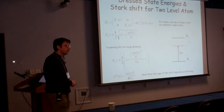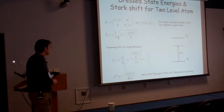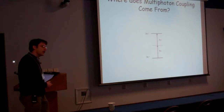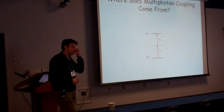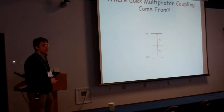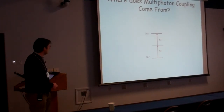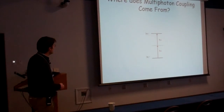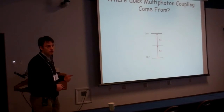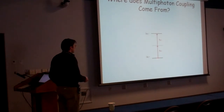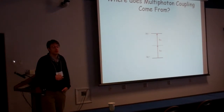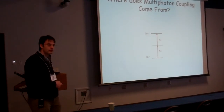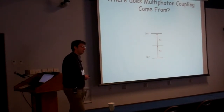Now, what happens if we consider a multi-photon coupling case? This is the basic idea behind many strong field experiments: you're interested in coupling two states — some ground state and some other state, either bound or in the continuum — where either they're not dipole coupled or the field can't resonantly couple them. We can have absorption of multiple photons to go from an initial state to a final state. How can we describe that absorption and what consequences does it have?